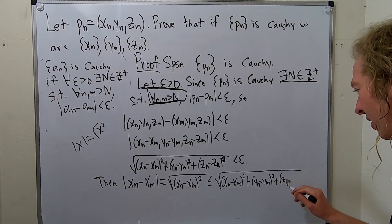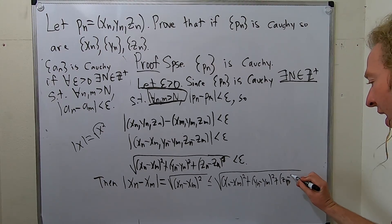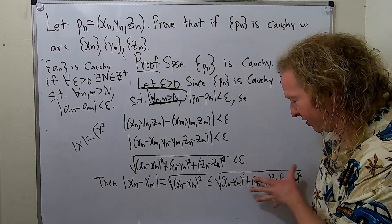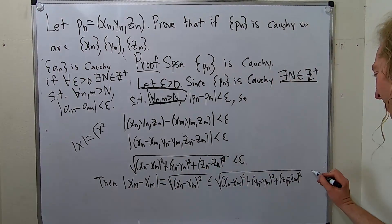So the right-hand side is actually bigger than the left-hand side. Right? Because this is less than this. Because you're adding stuff. So this is bigger than this. And this is less than epsilon.